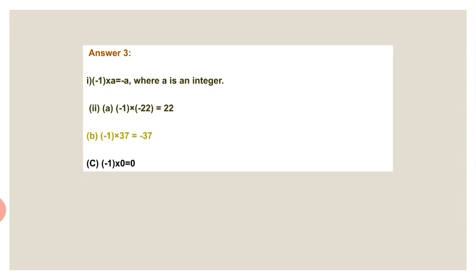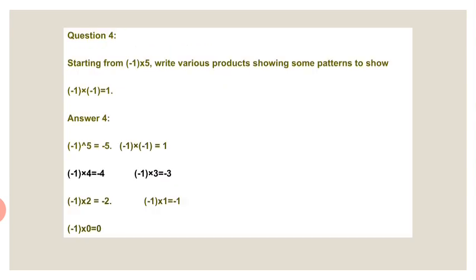Then A sum: minus 1 into minus 22, the answer exists as plus 22. B sum: minus 1 into 37, the answer exists as minus 37. Anything multiplied with 0, the answer exists as 0. Then the fourth sum: you need to start from minus 1 into 5 with various products to show patterns. Minus 1 into minus 1, the answer exists as plus 1. By using this additive inverse number, you need to find the patterns of 5 extra numbers that you need to write.